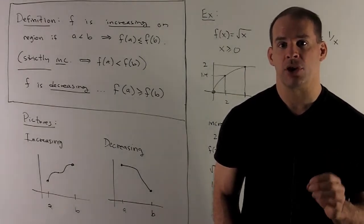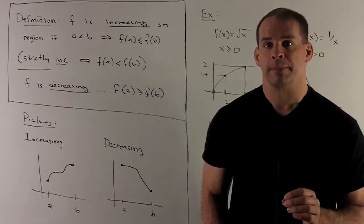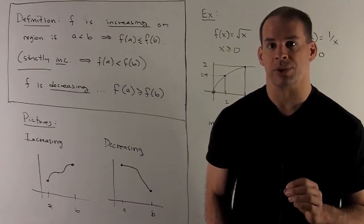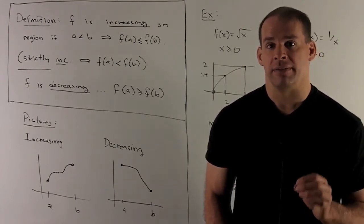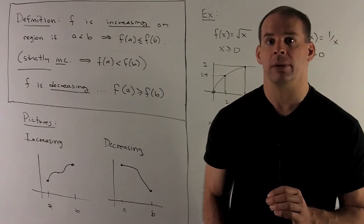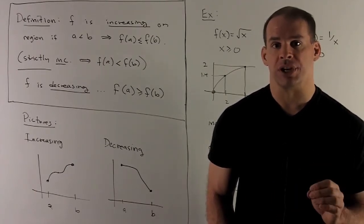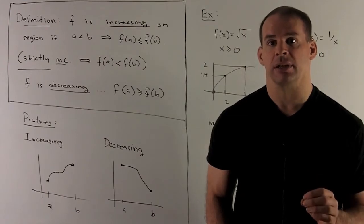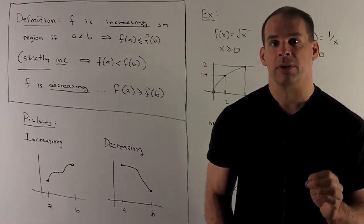We'll say f is increasing on a region if, whenever a is less than b, f of a is less than or equal to f of b. We'll say strictly increasing if f of a is strictly less than f of b. We'll have analogous definitions for decreasing and strictly decreasing. There, we'll switch the order of the inequality for f.